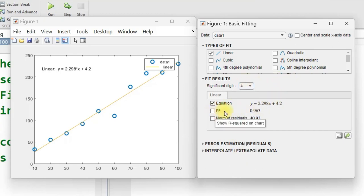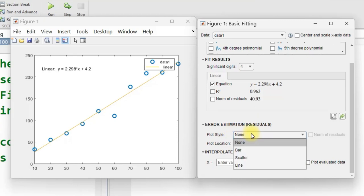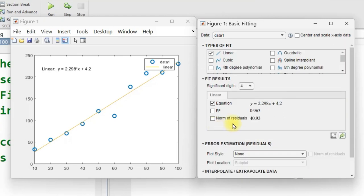You can look at the R-squared value, the norm of the residuals. There's even little pull-down menus down here, or if that's the right word for it, where you can scroll down. You can change the plot style, whether you'd want a bar graph, a scatter graph, a line graph, and all kinds of other options and interactions that you can do with your data here.